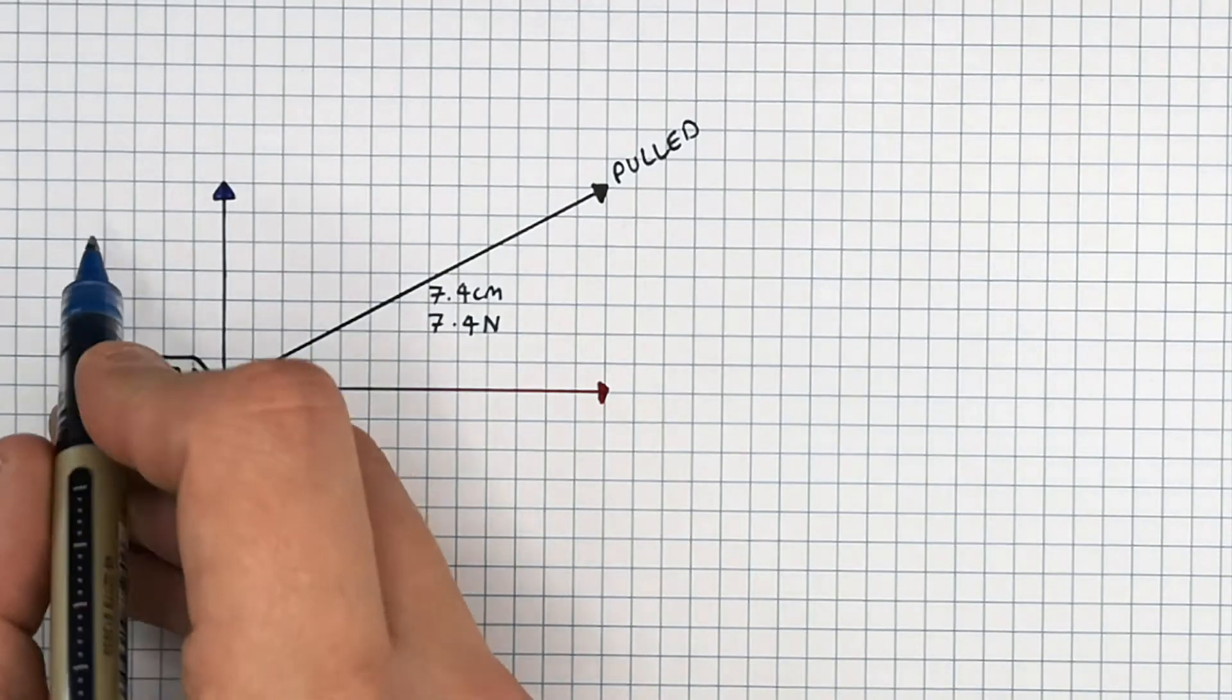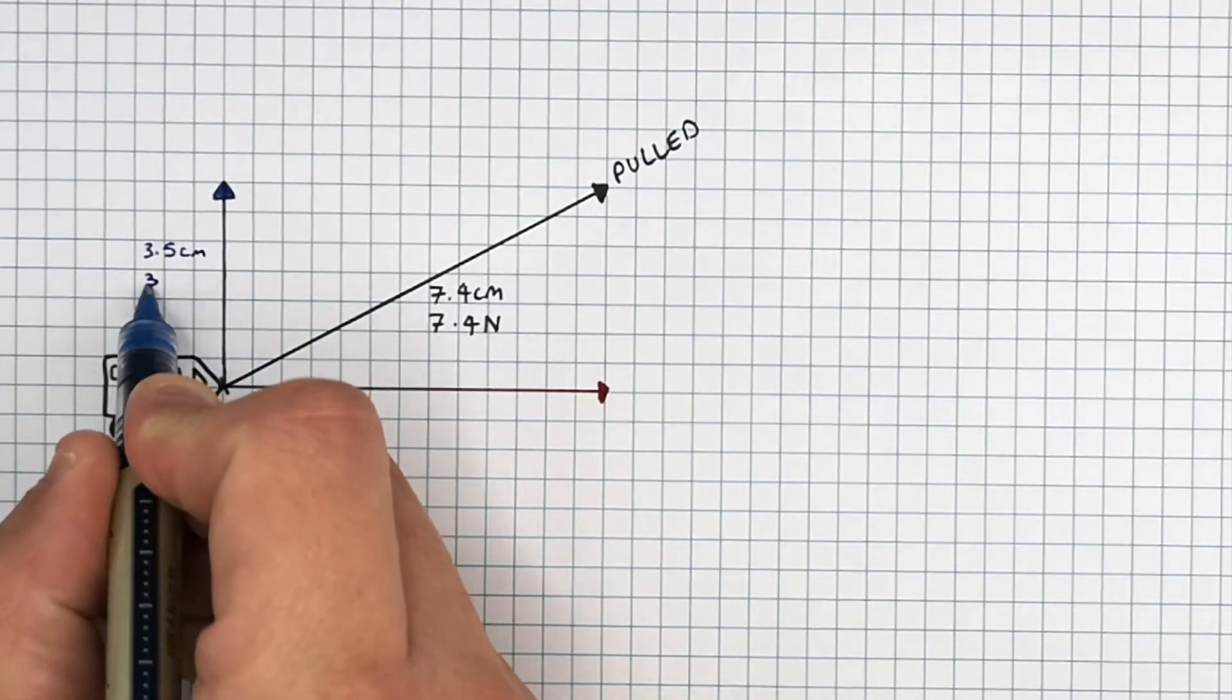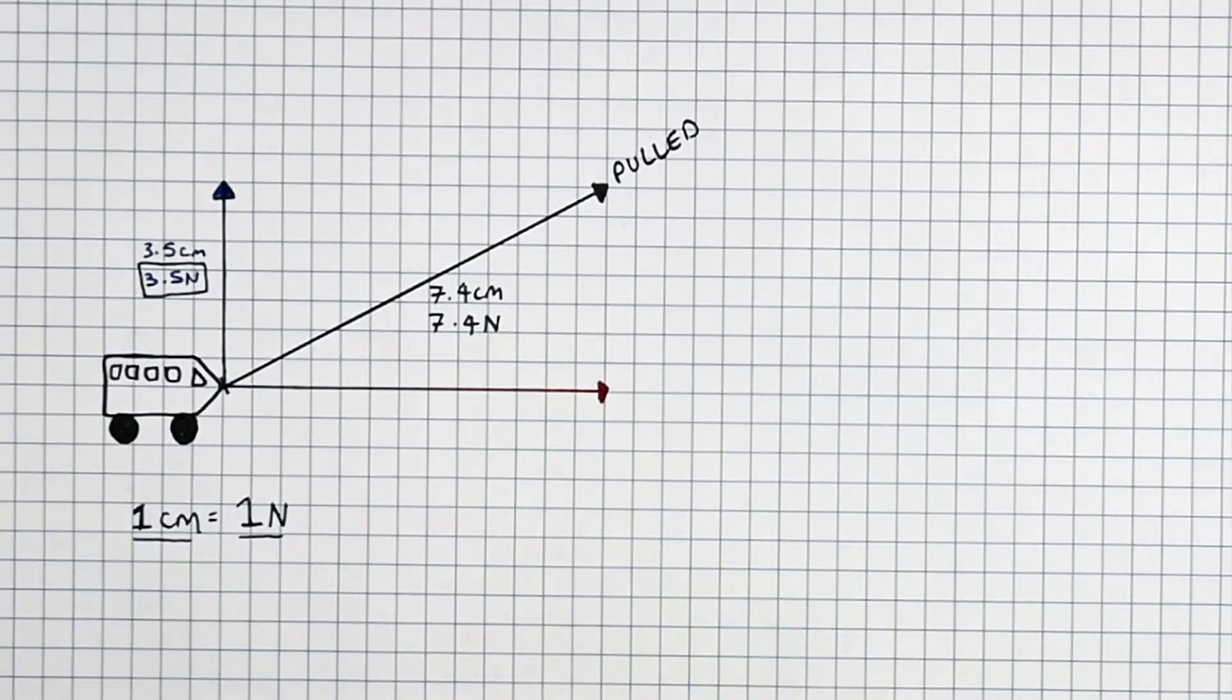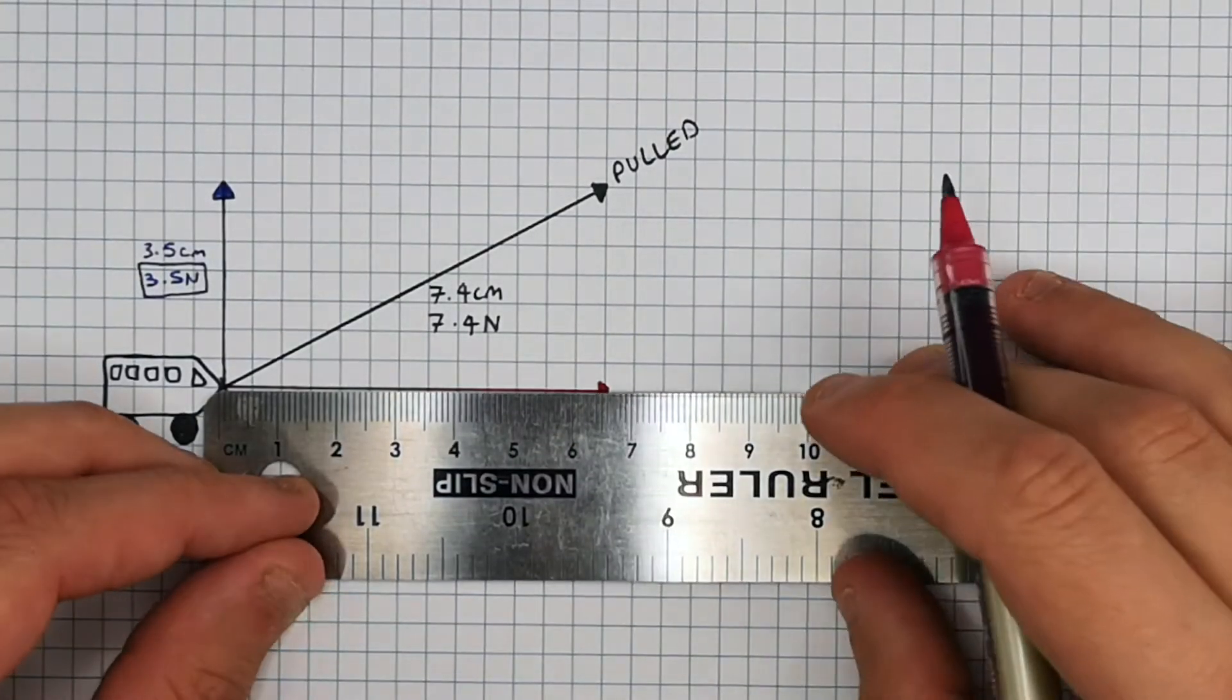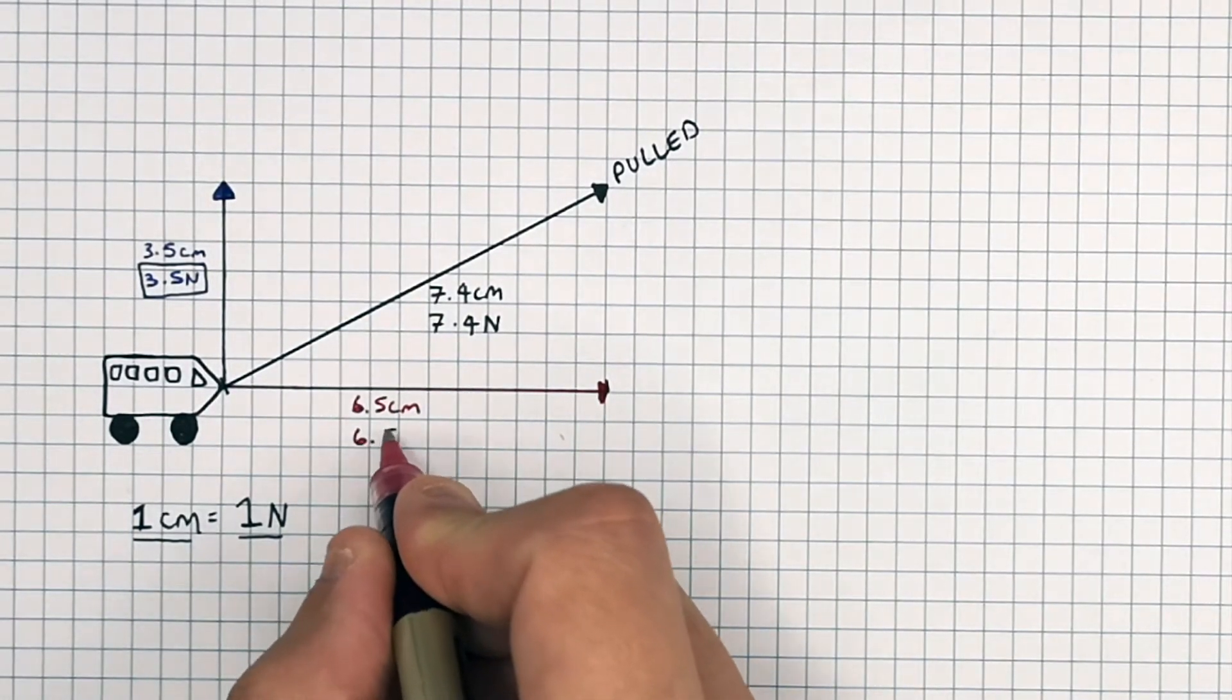So the vertical component is 3.5 centimeters, which means the magnitude of the vertical component is 3.5 newtons. The magnitude of the horizontal force measures 6.5 centimeters, which means the magnitude of the force is 6.5 newtons.